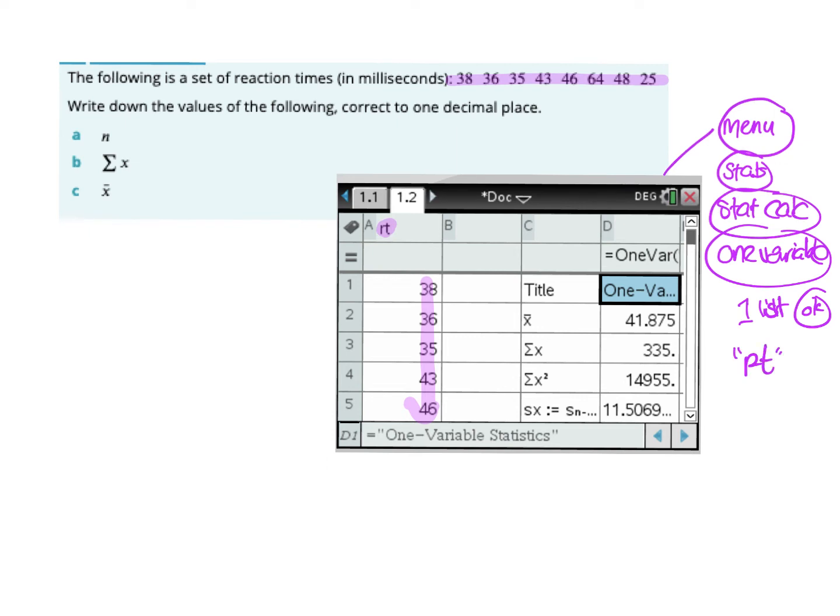Now what they wanted to ask in the questions, they want the N. This is the total like number surveyed or whatever, total number of data. And if you type your list in, it will tell you N in it. So you can't see it here, but if you scroll down, there's one that says N. And you can see the mean here. So which was, so there's the mean, 41.875.